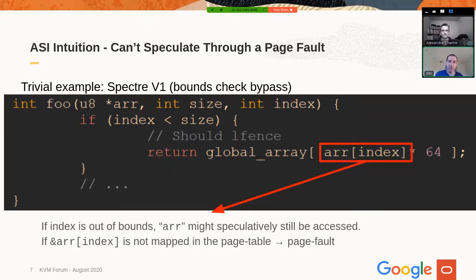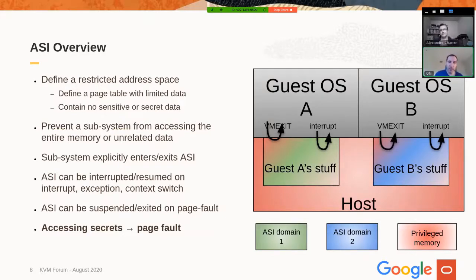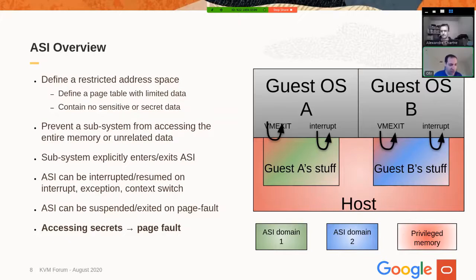The key intuition behind ASI is to not map data we don't need into the page table. As an overview, the idea is that when we have two guests running, most of the time when serving a VM exit we touch memory related to the current guest. In ASI, we have a limited page table — think of it as ASI domains. Guest A has ASI domain one and guest B has ASI domain two. When guest A is running and serving most VM exits, we only touch data related to guest A. If guest A tries to steal data that belongs to itself, that's acceptable because there are no significant secrets that would be exposed.